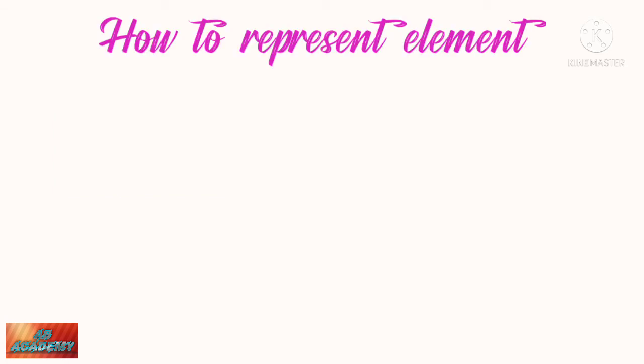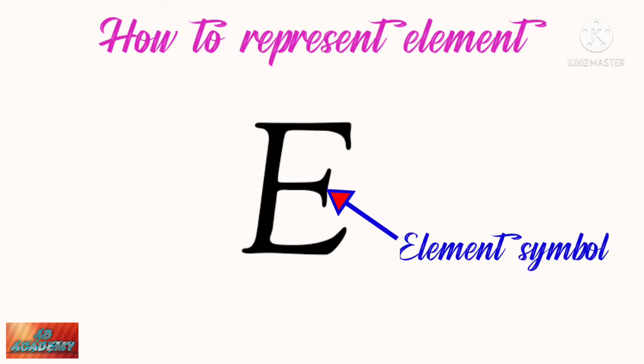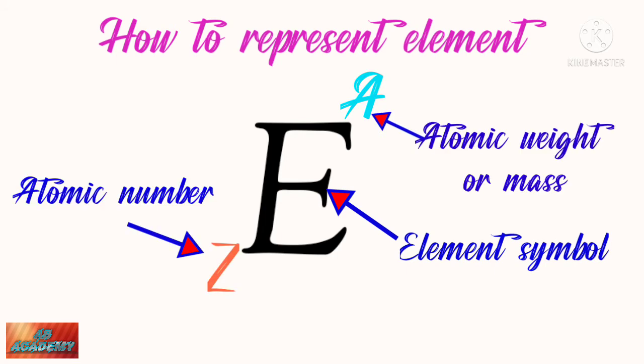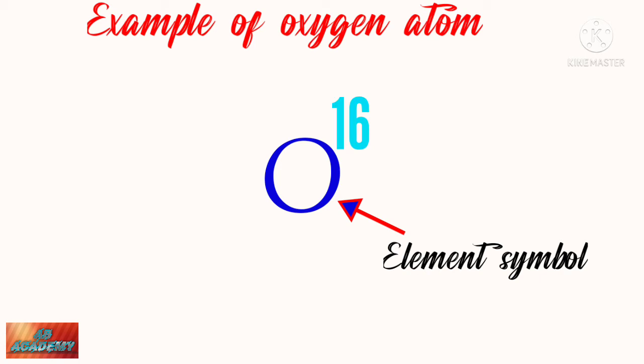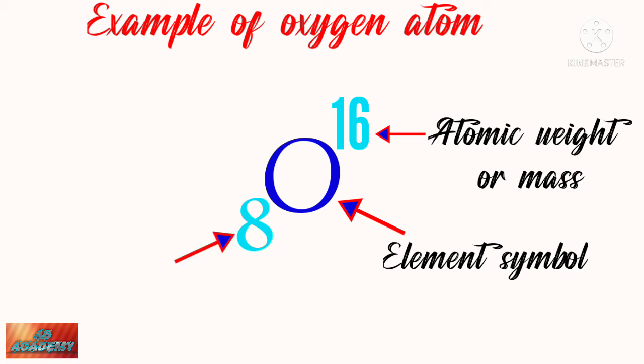Now let's see how to represent an element. E is the element symbol, A is the atomic weight or mass, and Z is the atomic number. Let's look at an example: oxygen. O is the element symbol, 16 is the atomic weight or mass, and the atomic number of oxygen atom is 8. This is an element representation.